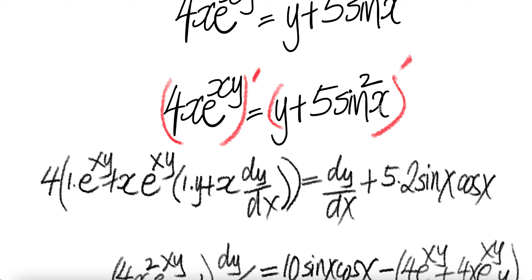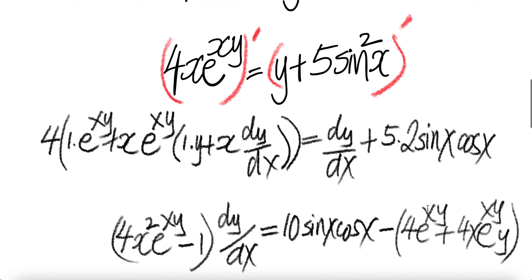Now take the derivative on the right side. Derivative of sum is sum of derivatives. Derivative of y is dy/dx. Derivative of this is 5 comes out and then 2 comes down, sine x times the derivative of sine x is cosine. Apply the chain rule.